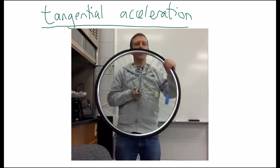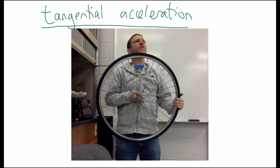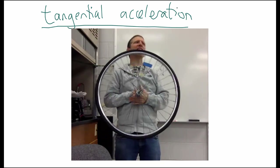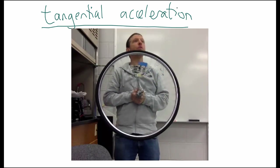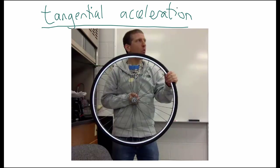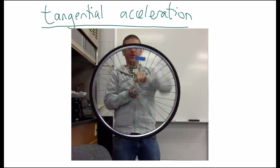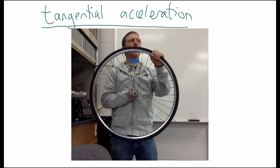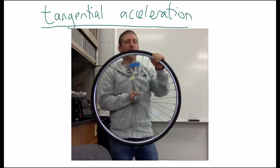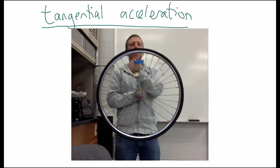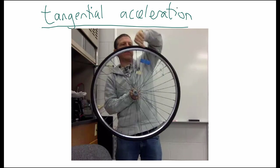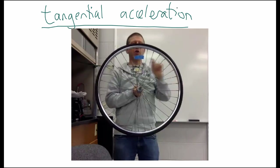Typically, when something's moving in a circle, just like instead of x and y, we've got to give it two components. But moving in a circle, x and y doesn't always help us. The two components are: this way we call radial — it's parallel with the radius. And the direction perpendicular to the radius we call the tangential direction.